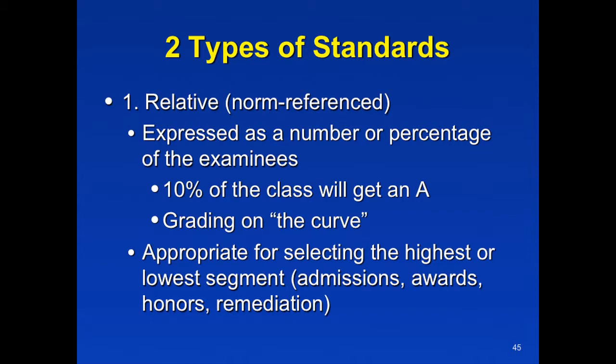Ten percent of the class will get an A. That ten percent — the score for that may drift all the way down to 50% on the final exam. But the top ten percent, no matter what their scores are, will get the A. So that's just grading on the curve, something some of you may like, some may not. But it is a way of setting standards.